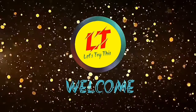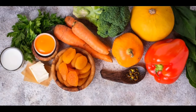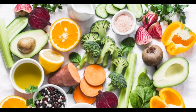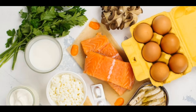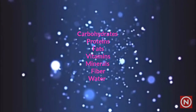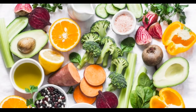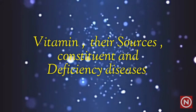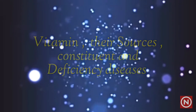Hey kids, welcome back to my channel. A nutrient is any substance that is absorbed and either provides you with energy or enables growth, repair, or proper functioning of the body. There are seven main classes of nutrients: carbohydrates, proteins, fat, vitamins, minerals, fiber, and water. It is important that everyone consumes these seven nutrients daily. Deficiency, excesses, and imbalances in diet can produce negative impacts on health, which may lead to disease. Today we will learn about vitamins, their sources, constituents, and deficiency diseases.